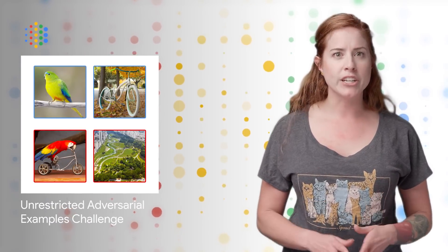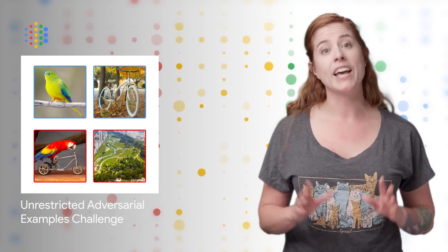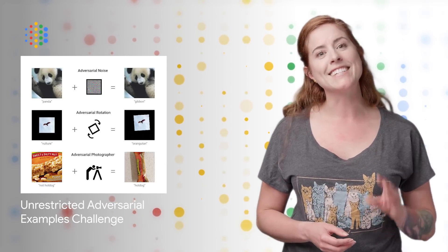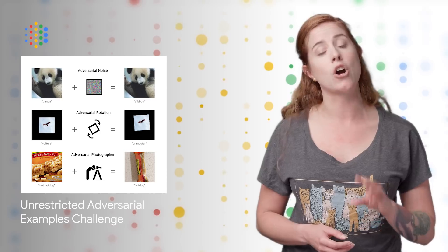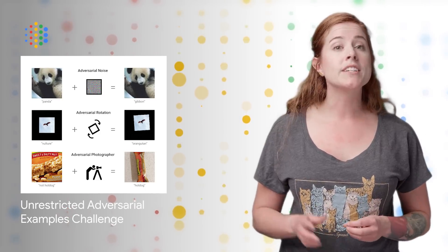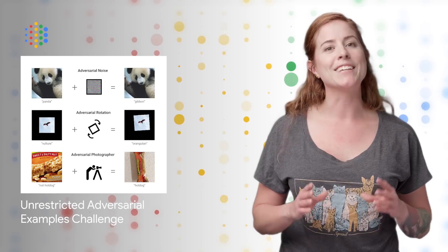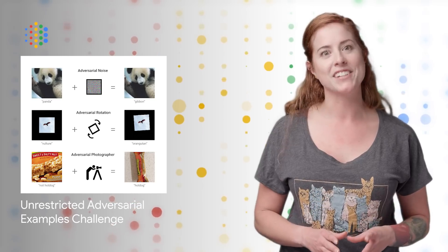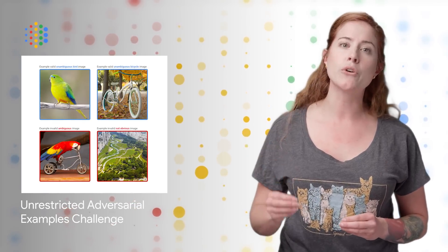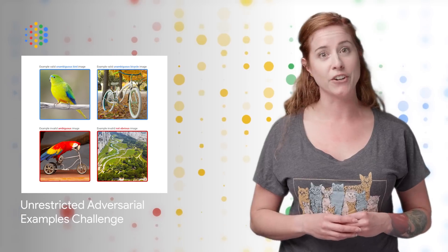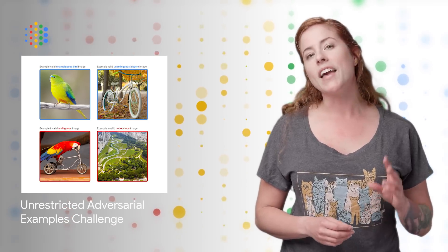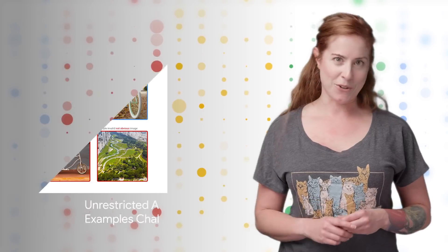All known machine learning algorithms are vulnerable to adversarial examples, which are inputs that an attacker has intentionally designed to cause the model to make a mistake. The Unrestricted Adversarial Examples Challenge is a community-based challenge to incentivize and measure progress towards the goal of zero-confident classification errors in machine learning models. For examples and a link to participate, take a look at the post.